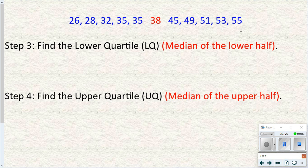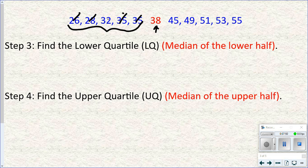There are five values you need to create a box plot. The next one is to find what's called the lower quartile, which is simply the median of the lower half. So looking at the lower half of the data, I cross off from the outside working inward, and the median of the lower half is 32. That's called the lower quartile, abbreviated LQ, and it equals 32.